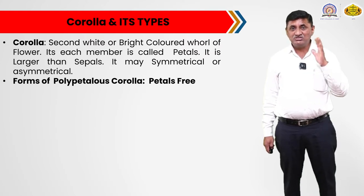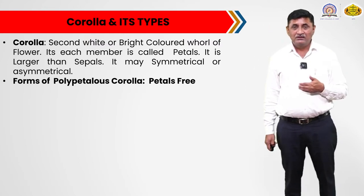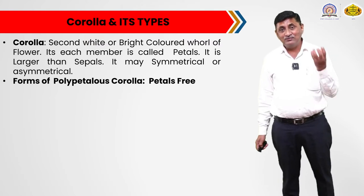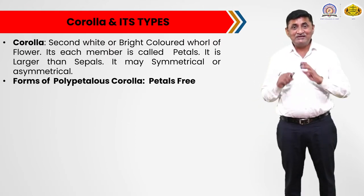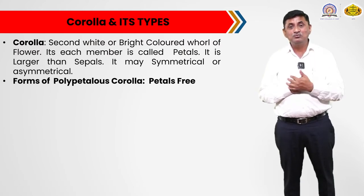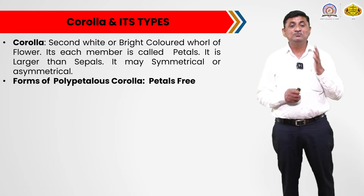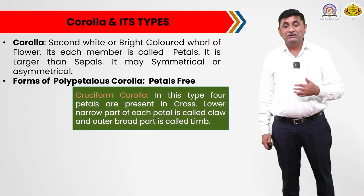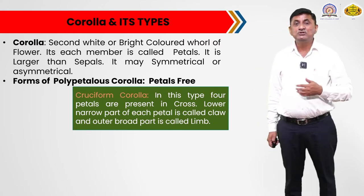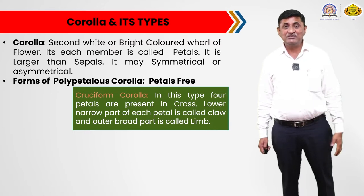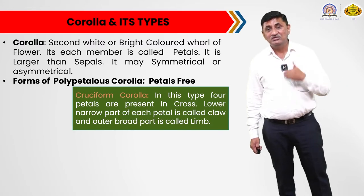The corolla is of two types. When the petals remain free from one another in a flower, such corolla is treated as polypetalous corolla. And when petals are united and they form a tube-like or different shaped structure, such corolla is called gamopetalous corolla. These are the two basic forms of corolla. Now we will see the different forms of polypetalous corolla — meaning the free corolla.